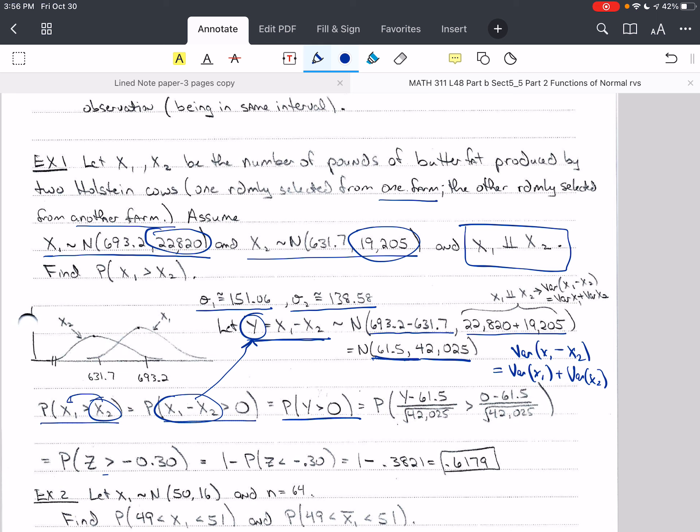So we do our transformations just like we did back in section 3.3. We'll take y minus its mean, which is 61.5, and divide it by the square root of its variance. And then we take 0 minus the mean, and divide it by the square root of the variance.